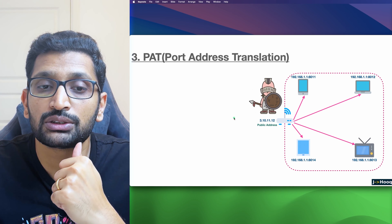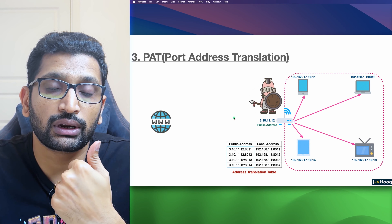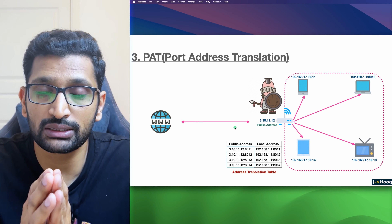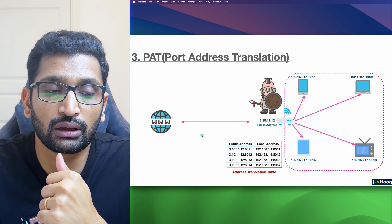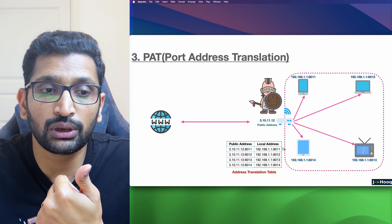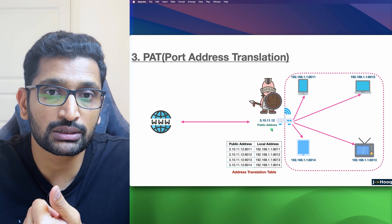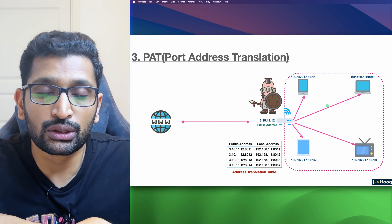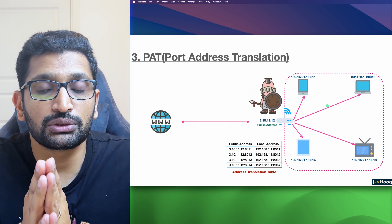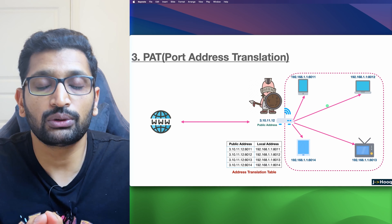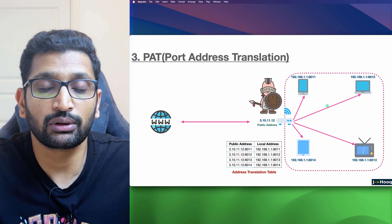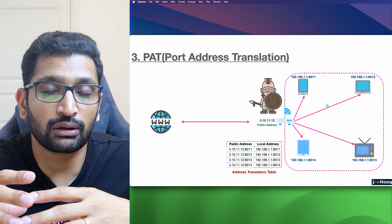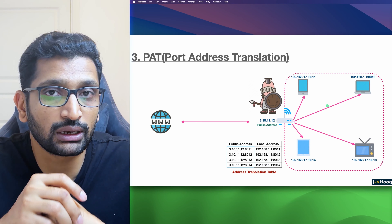One of the biggest advantages of network address translation is that it safeguards your devices. The end user or public user is only able to access your public address, while all your private addresses are hidden behind your networking. This provides a certain level of security and protection when you are using NAT.